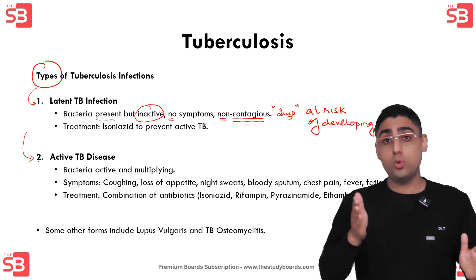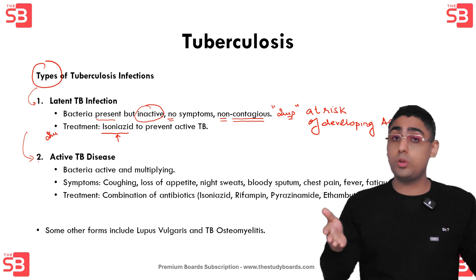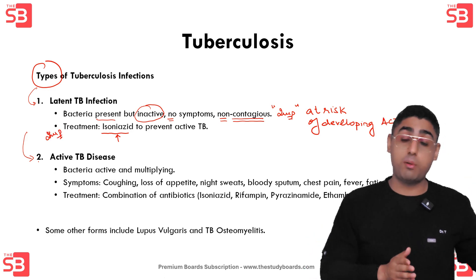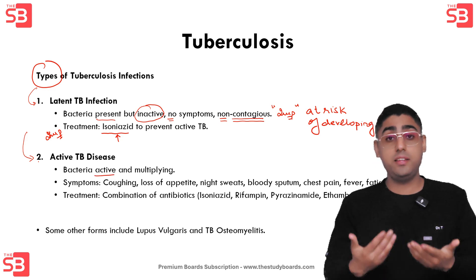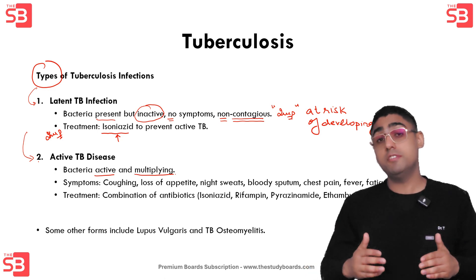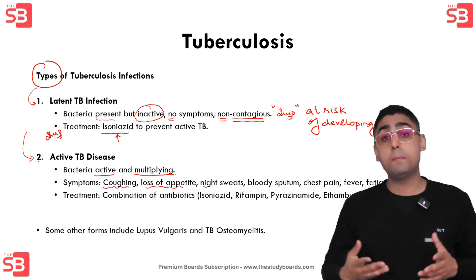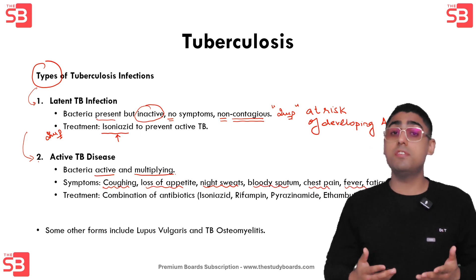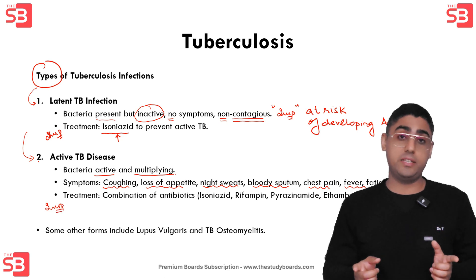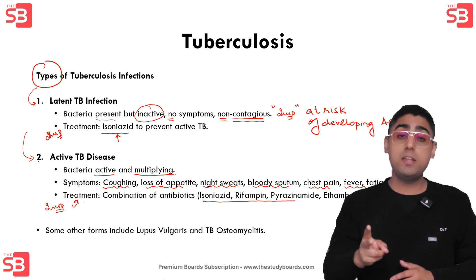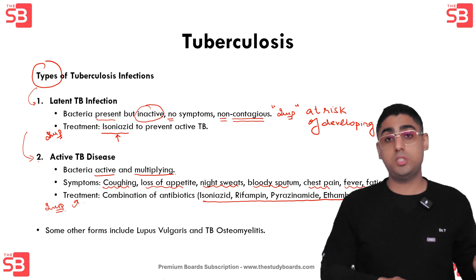To prevent the transition from latent to active TB, treatment usually involves the antibiotic isoniazid — this is an exam question, as you will be asked to compare treatment for latent versus active TB. With active TB, the bacteria is active and multiplying, causing symptoms including coughing, loss of appetite, night sweats, bloody sputum, chest pain, fever, and fatigue. Active TB can spread to others and requires treatment with a combination of antibiotics: isoniazid, rifampin, pyrazinamide, and ethambutol — compared to latent TB where only isoniazid is given.